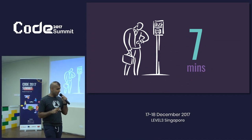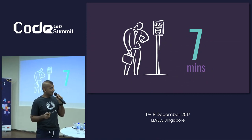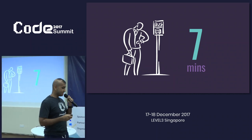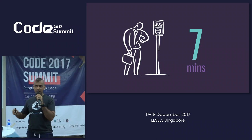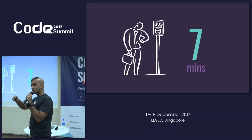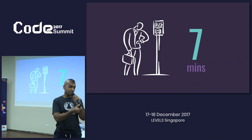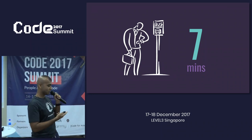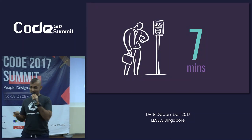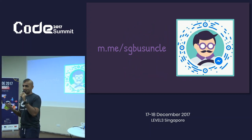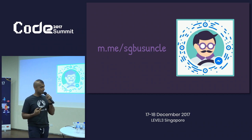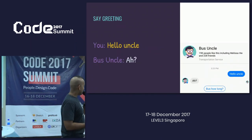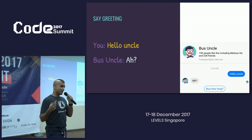I decided to build something like this. In October 2016, Facebook had released a new platform called the Messenger Platform, which allows third-party developers to build bots — services on top of their messenger platform. If you chatted with something on Facebook it would reply back to you like a little program; these are called chatbots. So I thought, Facebook released this in April 2016, it's now October 2016 — maybe I can build a chatbot. So I went and built Bus Uncle. You can access Bus Uncle through the link m.me/sgbusuncle.